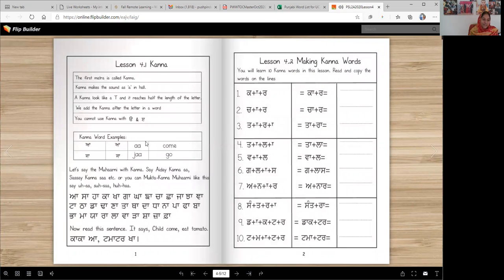Now today we are starting our first matara and that is called Kanna. Kanna makes a sound ah, as in hall or ball. A Kanna looks like a T and it reaches half the length of the letter. We add the Kanna after the letter in a word. You cannot use Kanna with Ura and Edi, but you can use with Ada and all other letters.